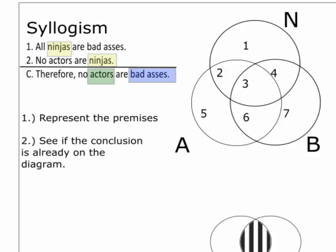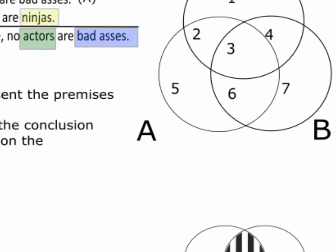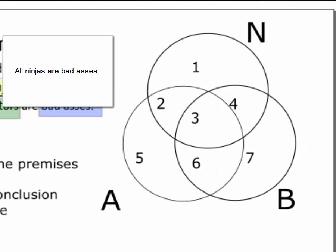Let's complete the diagram. The first premise is, all ninjas are badasses. If we were diagramming that statement alone, it would be easy enough. We put the subject on the left and the predicate on the right, and then shade subject minus predicate. In this case, though, the subject and predicate are not oriented in the same way.